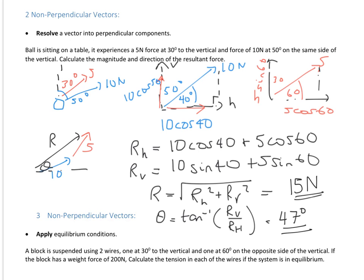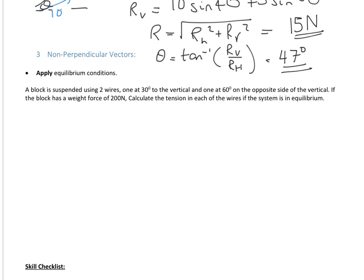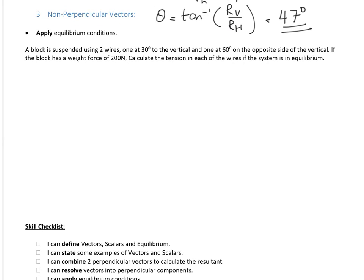Let's up the difficulty one more time to look at the condition of equilibrium. We said the resultant force is zero, and we use this principle to find unknowns. We have a block suspended using two wires at different angles — one wire at 30 degrees with tension T1, another at 60 degrees with tension T2 — and a weight force of 200 newtons acting downward. We want to calculate T1 and T2.